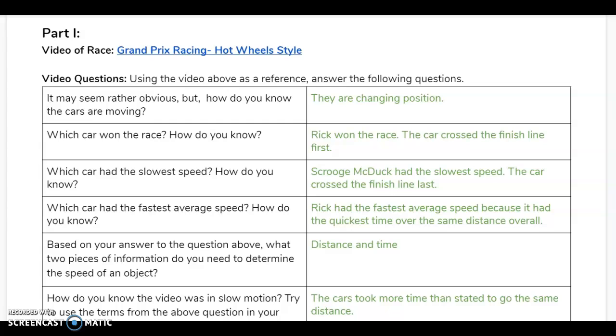The next question asks which car had the slowest speed and how we knew. Scrooge McDuck had the slowest speed and the way we could tell this was the fact that he crossed the finish line last. So it took him the longest amount of time to get down the ramp, which told us that he was the slowest.